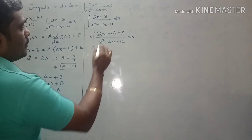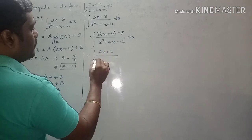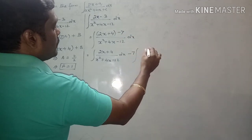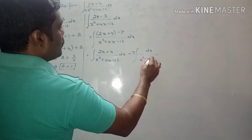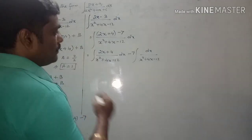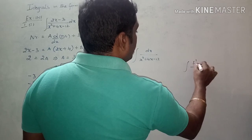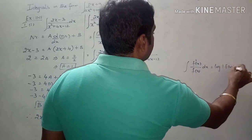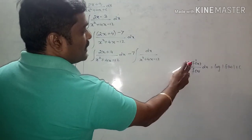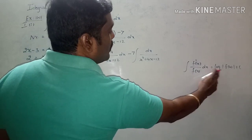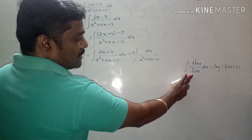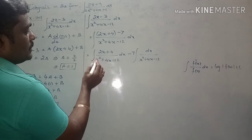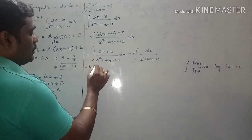Now split into two integrals. The first term gives the integral of (2x + 4) divided by (x² + 4x minus 12). We use the formula: integral of f'(x)/f(x) dx = log f(x). Since the denominator is f(x) and its derivative (2x + 4) appears in the numerator, this integral equals log of the denominator, i.e., log(x² + 4x minus 12).